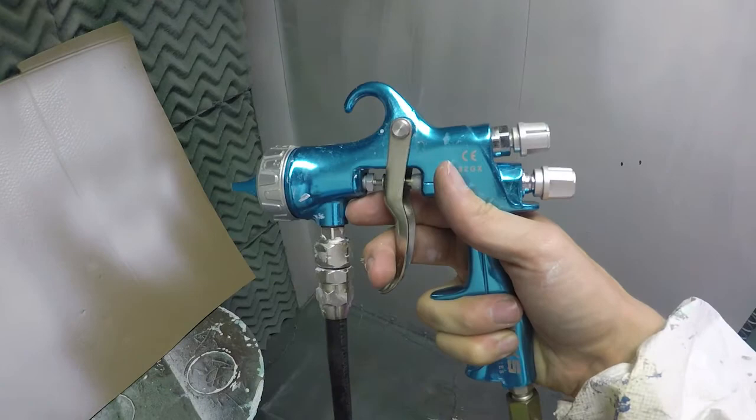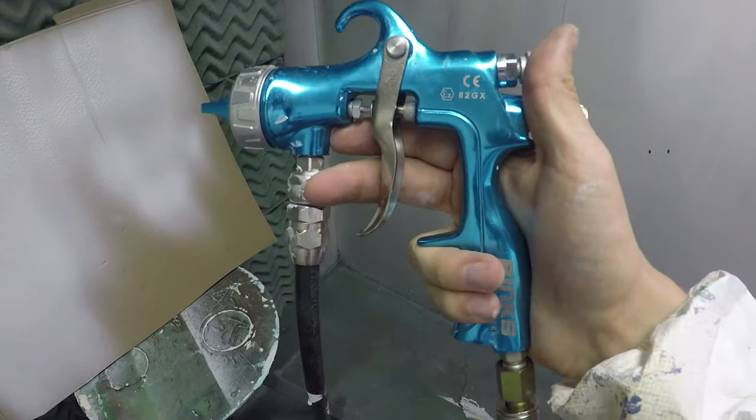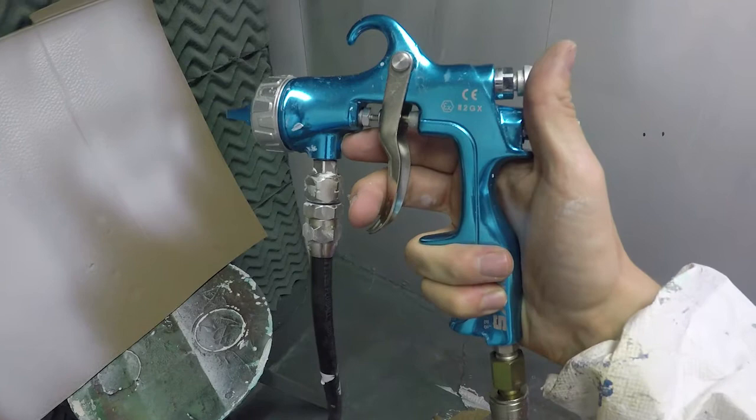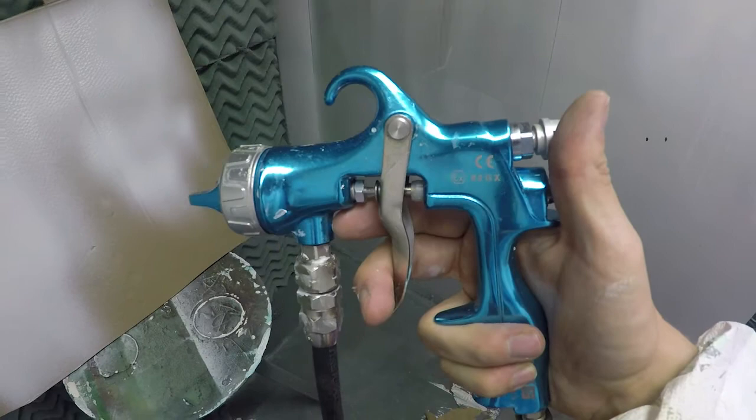Available in pressure, suction, there's a gravity version of this gun, so if you liked it and you wanted something to use as a gravity version, you could, and it comes in LVMP, conventional, and HVLP. We'll show you the conventional now.